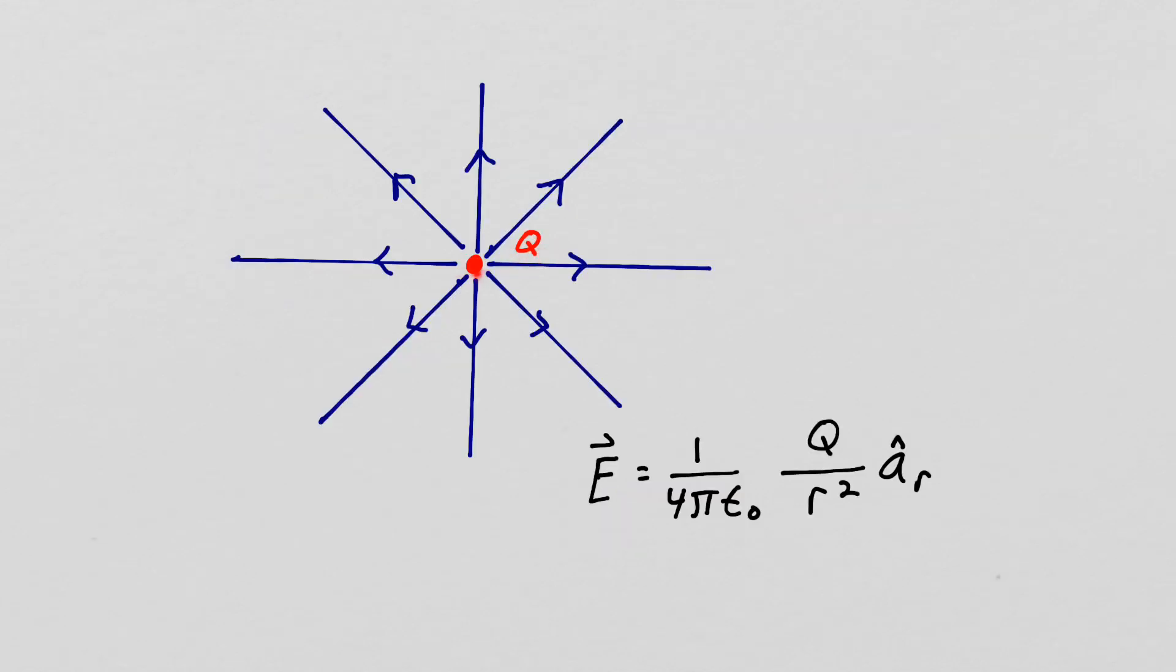For a point charge Q at the origin, the electric field intensity has spherical symmetry. A way we will imply that three-dimensional spherical symmetry is with a figure like this one.